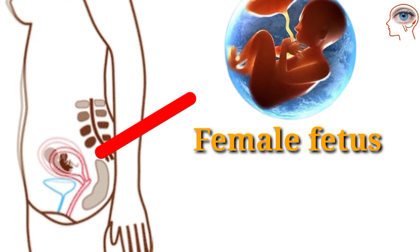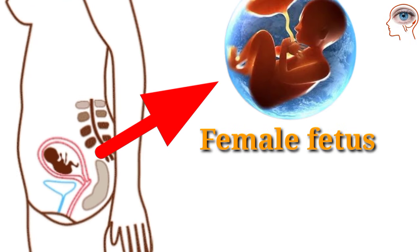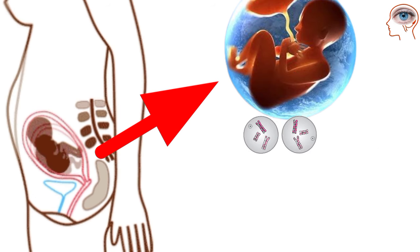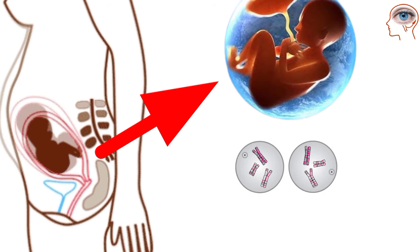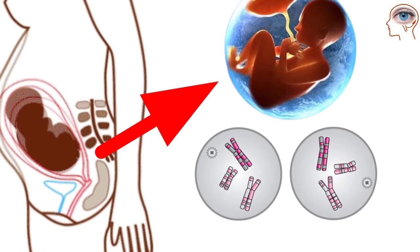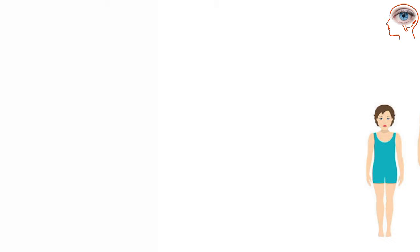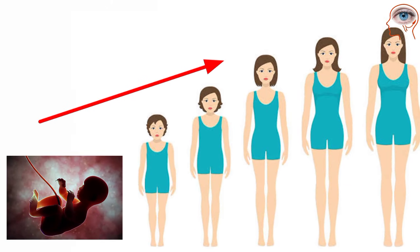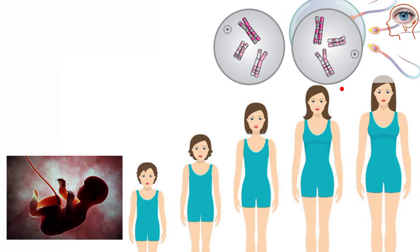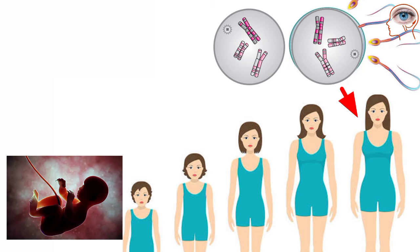Meiosis in females starts at the time of fetal stages with the entrance of a series of diploid cells into meiosis 1, and then rests and only completes after fertilization with sperm.